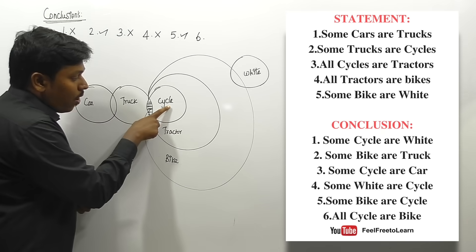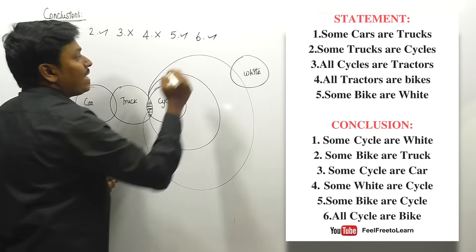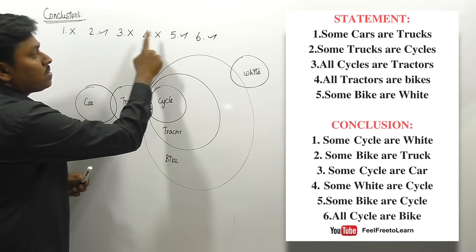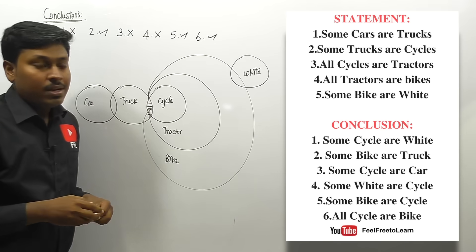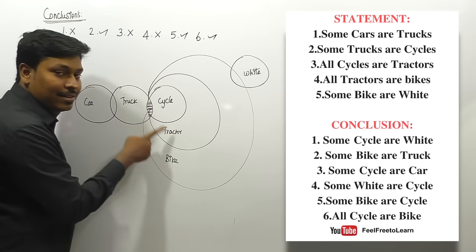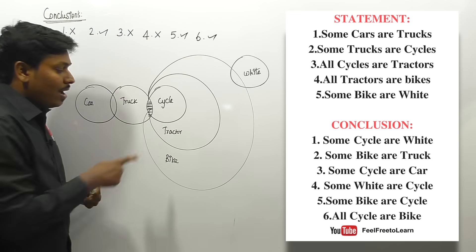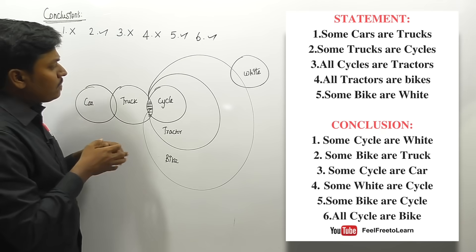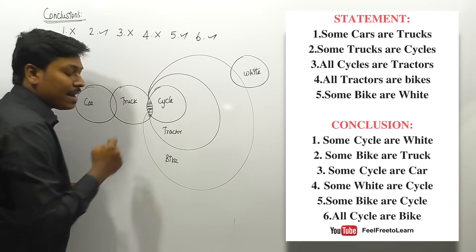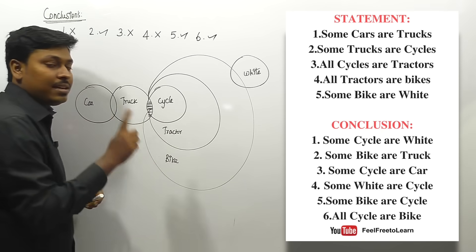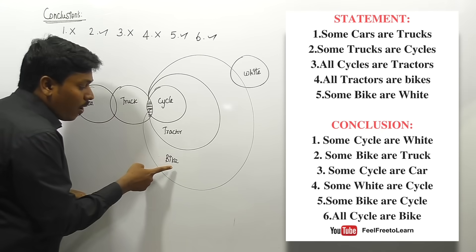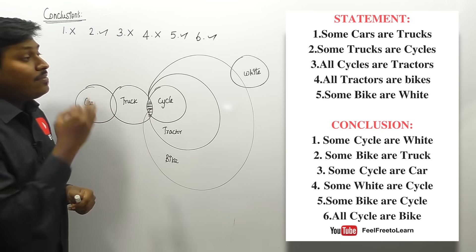Conclusion six: 'All cycles are bike'. This is exactly correct. So for question two, conclusions two, five, and six follow. Remember: all cycles are bike is true, but all bikes are cycle is false — you must know how to evaluate both 'some' and 'all' for a single diagram.